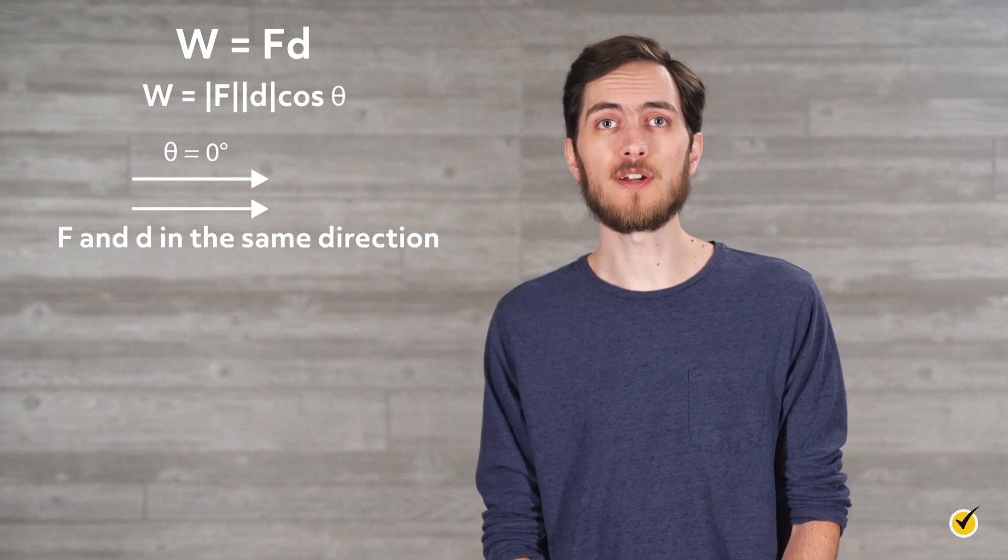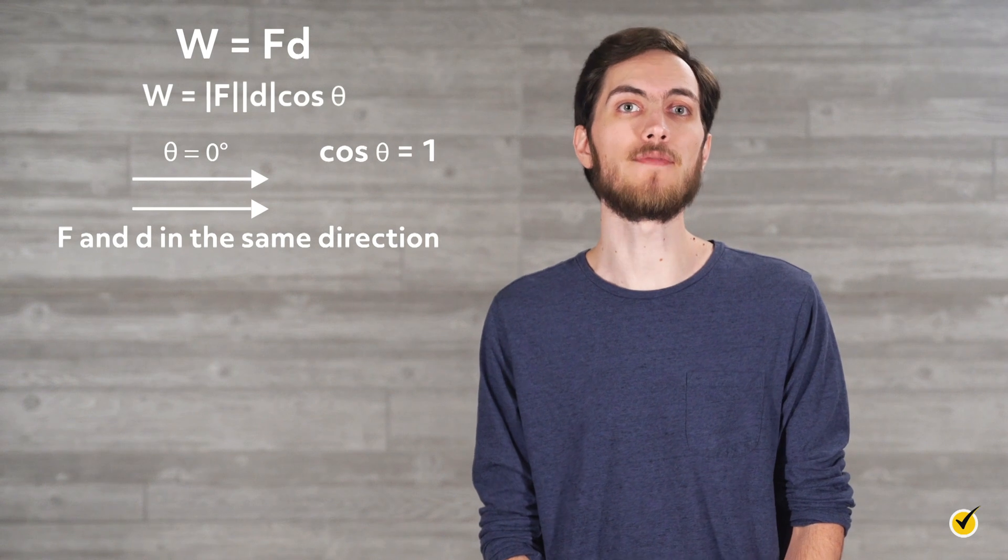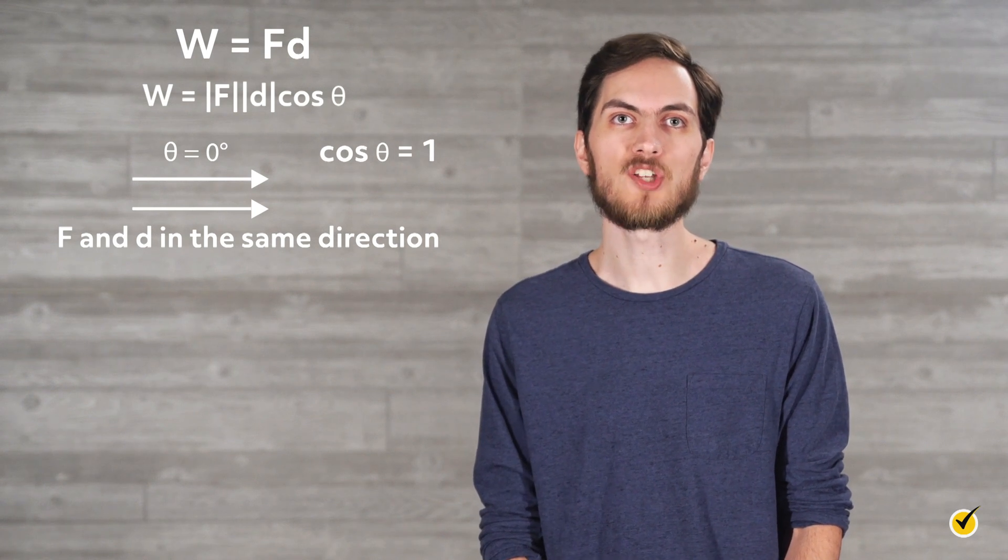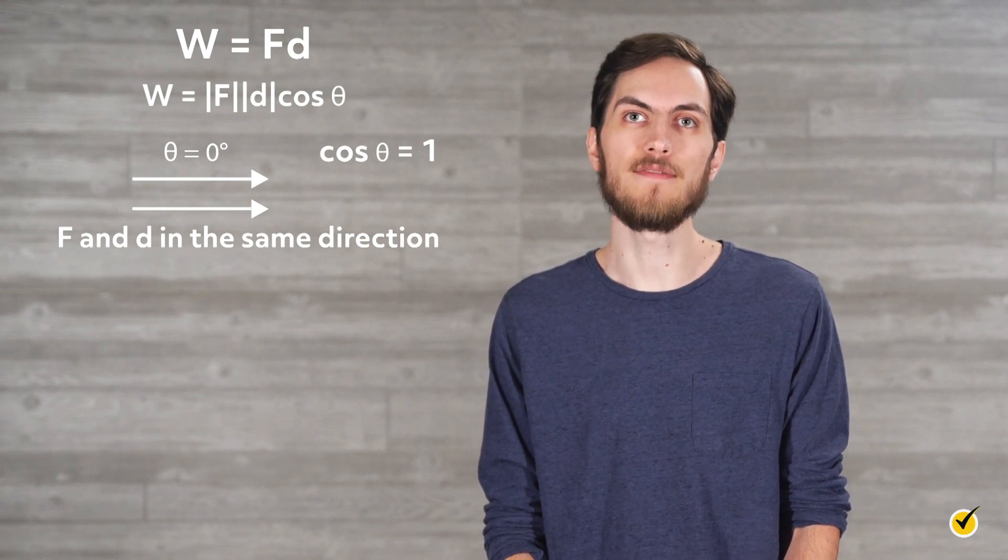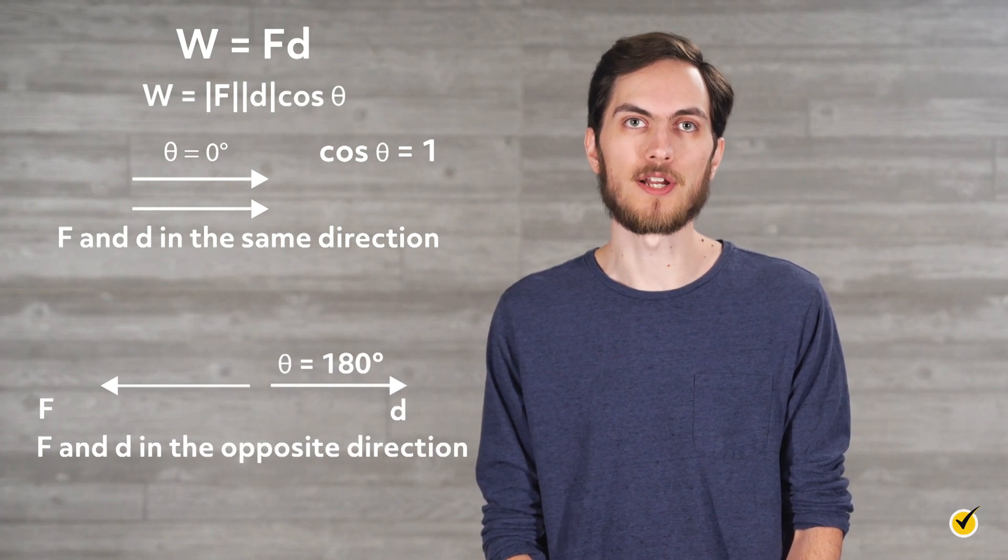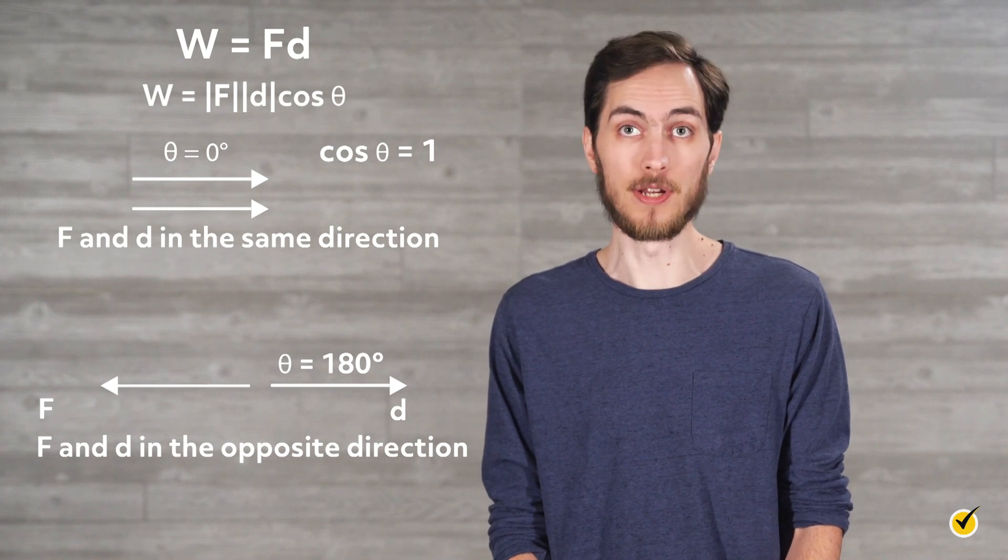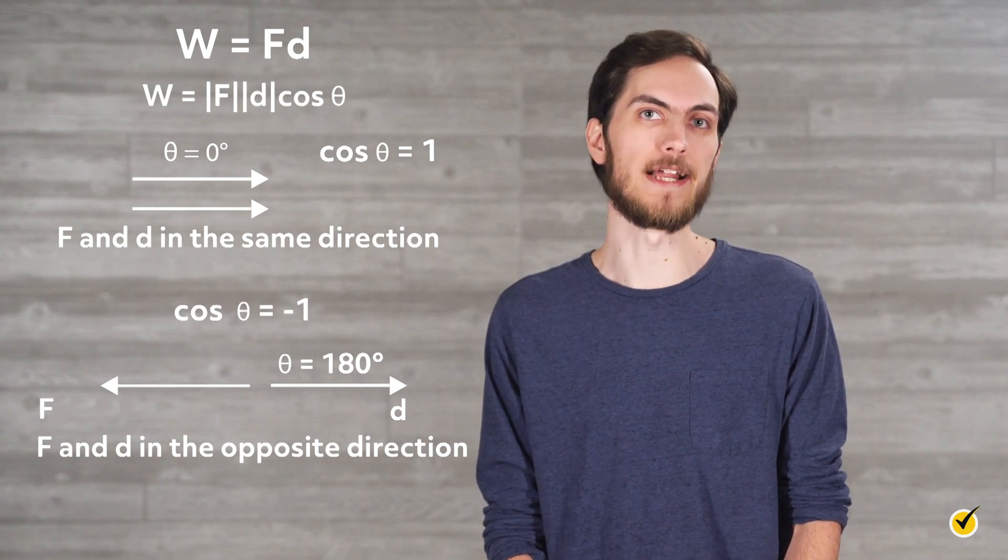When the force and displacement are in the same direction, theta equals zero degrees and cosine of theta equals one, leaving us with the familiar w equals f times d. When the force and displacement are in opposite directions, as in the case of negative work, theta equals 180 degrees and cosine theta equals negative one.